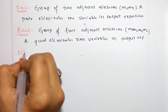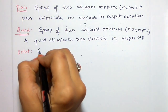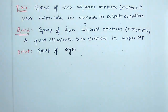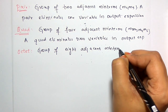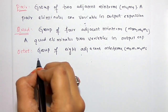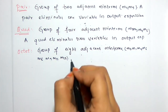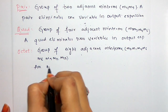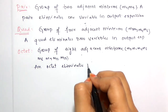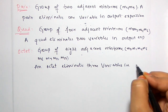Next one is octet. An octet is a group of 8 adjacent minterms. For example, M0, M1, M4, M5, M8, M9, M12, M13. An octet eliminates three variables in the output expression.